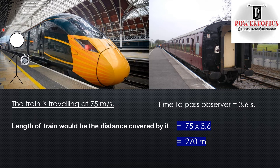That's it for today's video. However, I have a question for you. We know that this is the time taken for the train to pass the observer. How can the observer increase the accuracy of the time measured? Comment down your answers below and I'll be pinning the correct one.